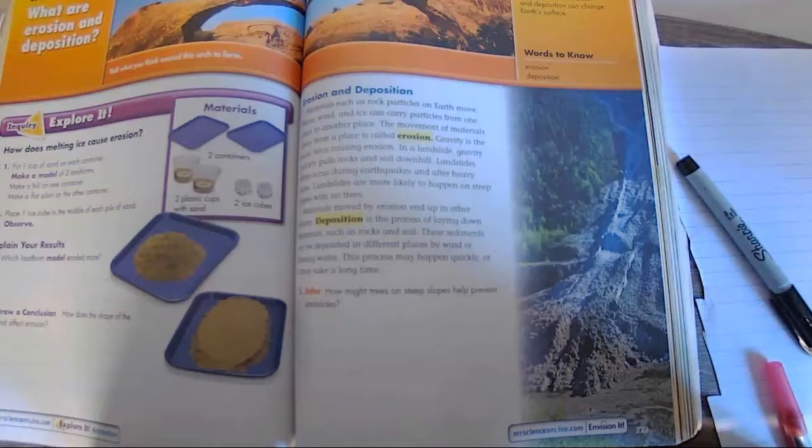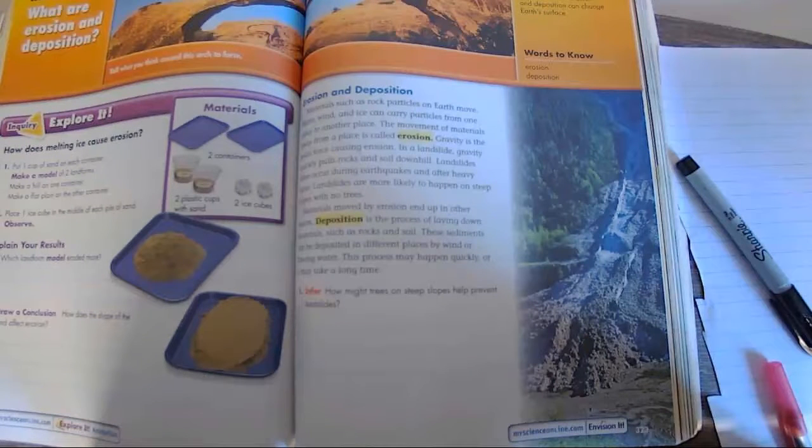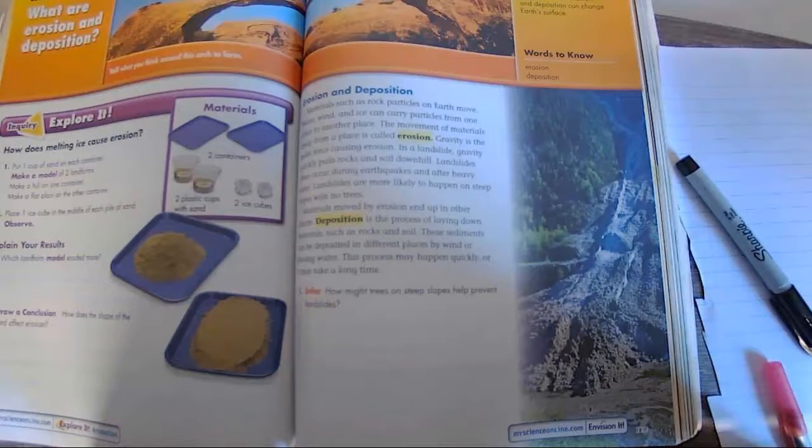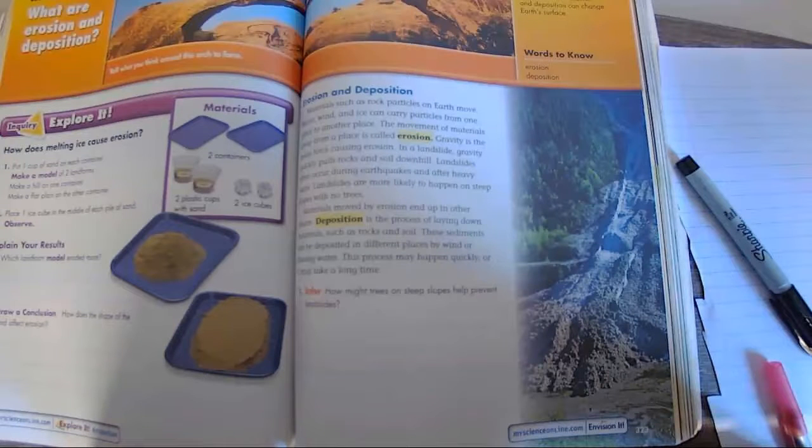So here we go, cohort B kids. Erosion and deposition. Materials such as rock particles on earth move. Water, wind, and ice can carry particles from one place to another place. The movement of materials away from a place is called erosion.